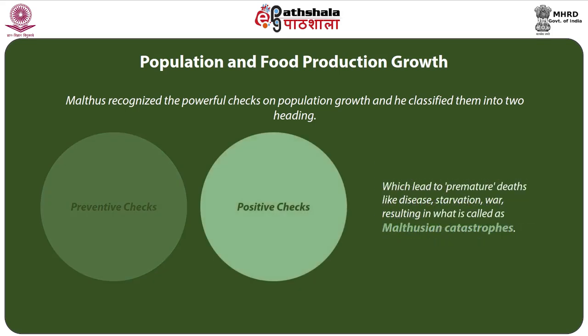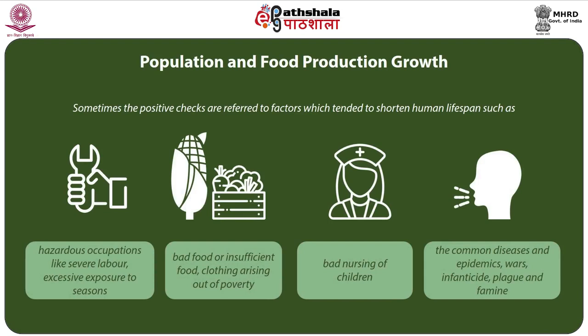The second category is positive checks, which according to Malthus lead to premature deaths like disease, starvation, and war, resulting in what Malthus called Malthusian catastrophes. Sometimes positive checks refer to factors which tended to shorten human life span, such as: hazardous occupations like severe labour and excessive exposure to seasons; bad or insufficient food and clothing arising out of poverty; bad nursing of children; excess of all kinds; and the common diseases and epidemics, wars, infanticides, plague, and famine.